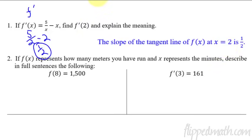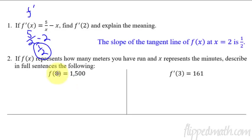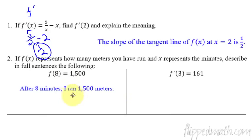Now here's a real-world example. If f(x) represents how many meters you have run and x represents the minutes, describe the following in full sentences. This first one is just function notation: 8 is the x (minutes), and 1,500 is the f(x) (meters). So after 8 minutes, I ran 1,500 meters.